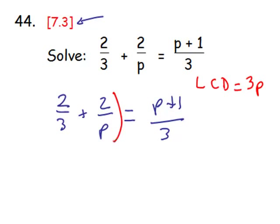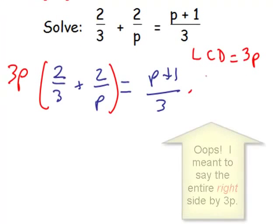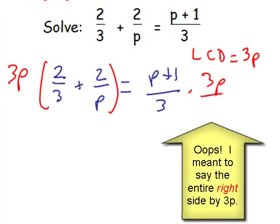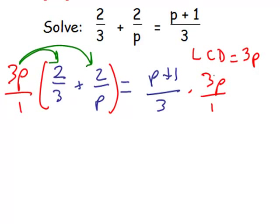Now, we're going to multiply the entire left side by 3p and the entire right side by 3p. In fact, I'm going to write it as 3p over 1 for each of them, and now our job is to distribute on the left side to each of those terms. On the right side, it won't distribute in the same way because we're just multiplying by one fraction, but the 3s will indeed divide out, leaving us with p plus 1 times p.